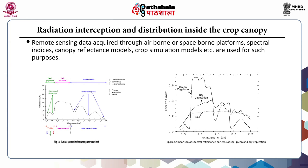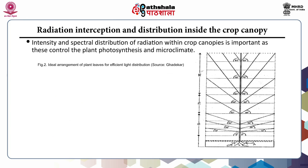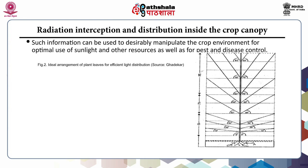Remote sensing data acquired through airborne or spaceborne platforms, along with spectral indices, canopy reflectance models, and crop simulation models, are used for such purposes. The intensity and spectral distribution of radiation within the crop canopy is important as it controls plant photosynthesis and the microclimate. Such information can be used to deliberately manipulate the crop environment for optimal use of sunlight and other resources, as well as for pest and disease control.